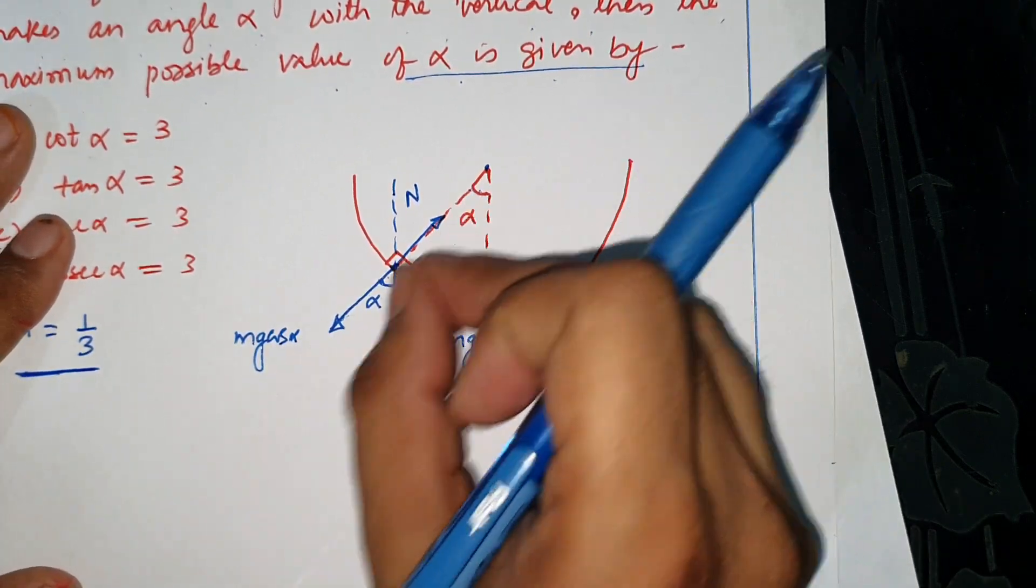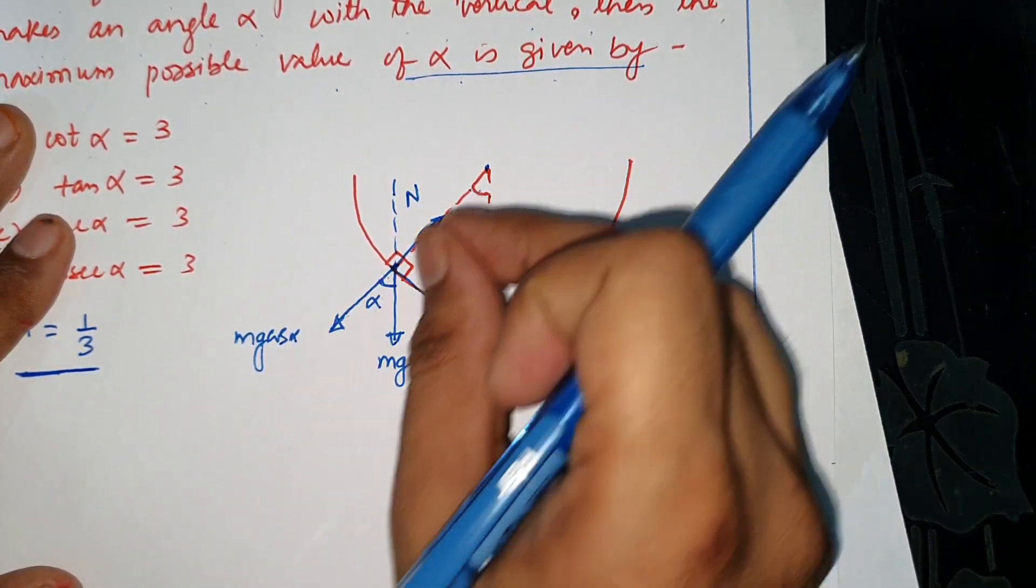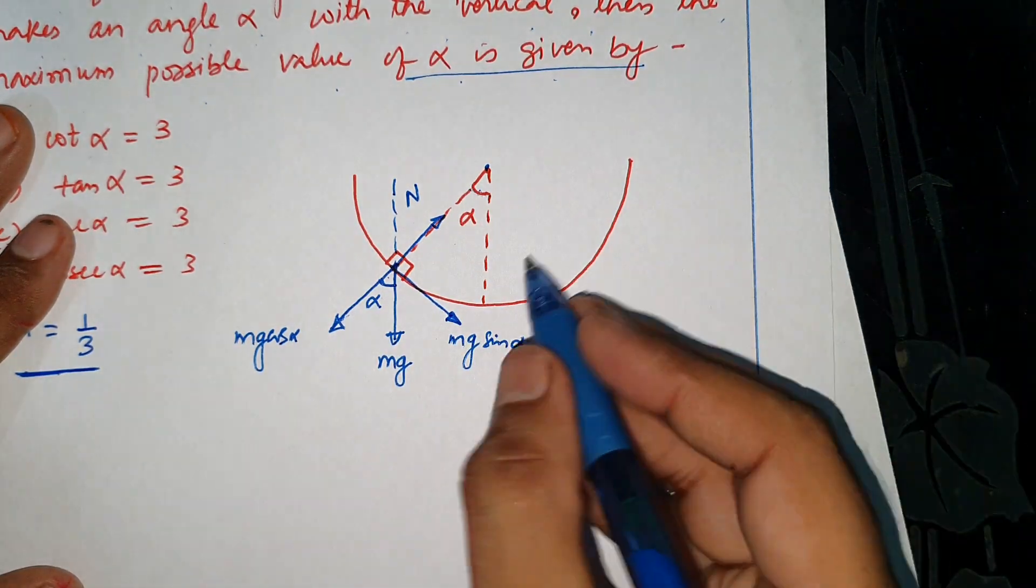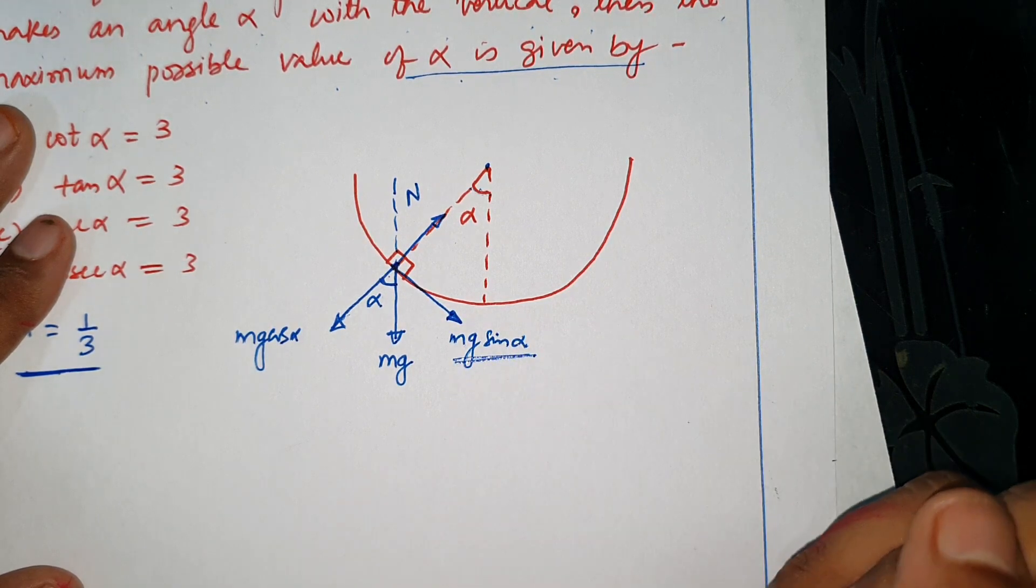N is mg cos alpha, this will balance the normal component. And mg sin alpha will be balanced by friction.